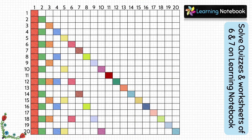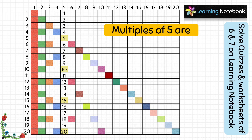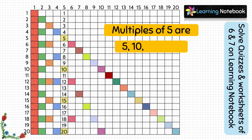Next, we will find the multiples of 5. For this, take a look at column 5. The boxes which are colored are 5, 10, 15, 20 and so on. So these are the multiples of 5.